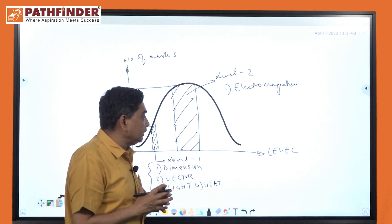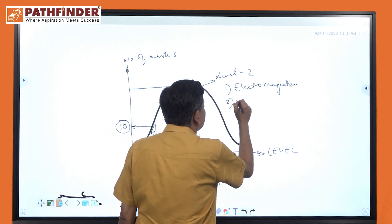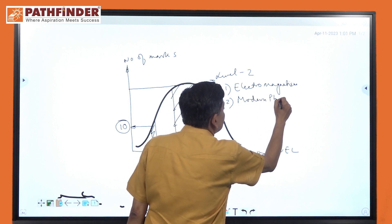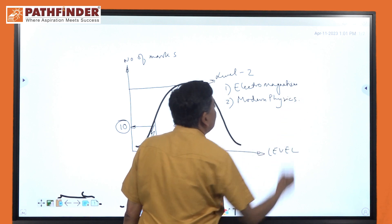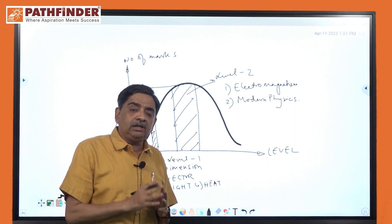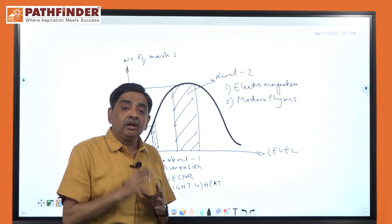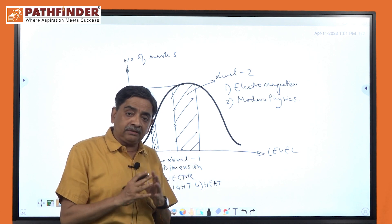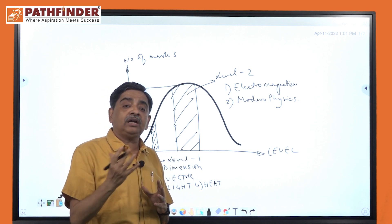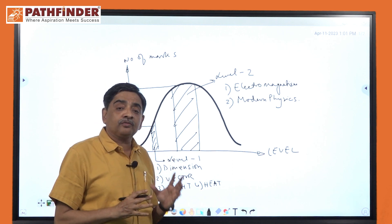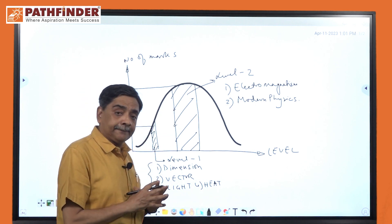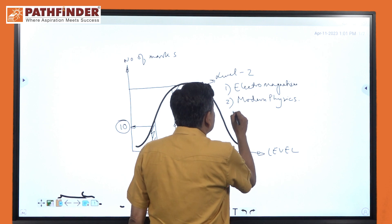Second important area is modern physics. There are important questions in modern physics — the Einstein photoelectric equation, the Bohr model spectral part, and radioactive decay. We are sure to get a major chunk of questions from modern physics.